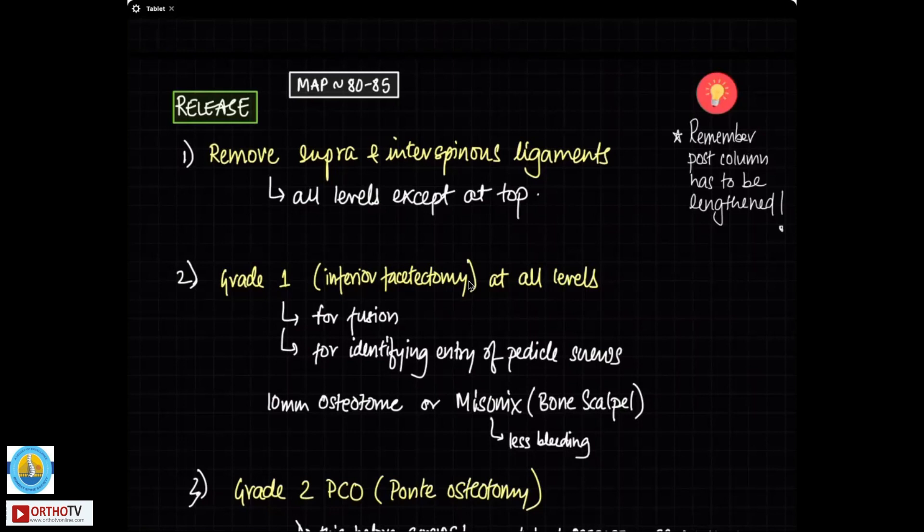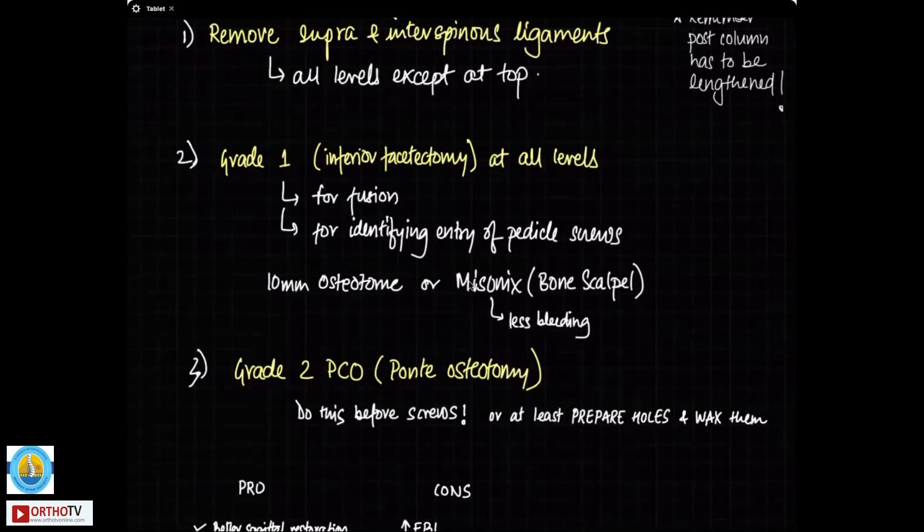Now, remember what the release is doing to the spine. In AIS, you want to lengthen the posterior column because only if you lengthen the posterior column are you going to get kyphosis. You want to correct the scoliosis, bring the apex as close to the midline as possible, but also you want to lengthen the posterior column so that you generate kyphosis and correct the hypokyphosis. The simplest release that everyone does is to remove the supraspinous and interspinous ligaments at all levels except at the top levels, which as I said before, you want to preserve.